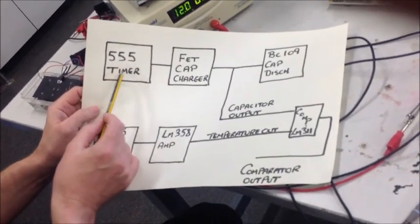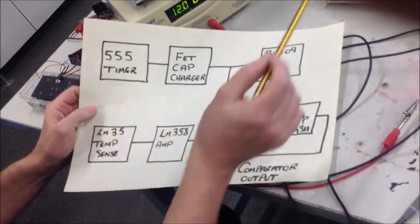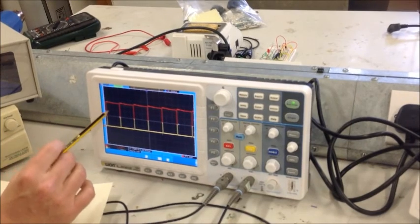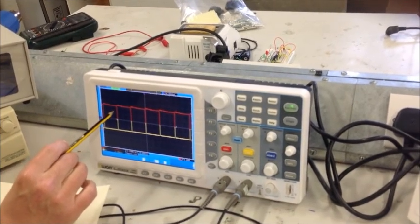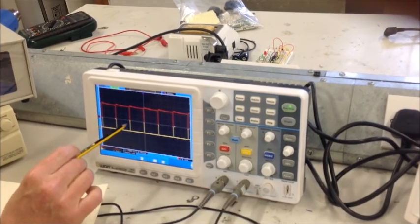Effectively, what we've got is a 555 timer, and that creates the frequency, the pulse frequency, and you can see that on the oscilloscope here. So the 555 timer has a duty cycle which is on for most of the time and then off just for a short fraction of the time there.